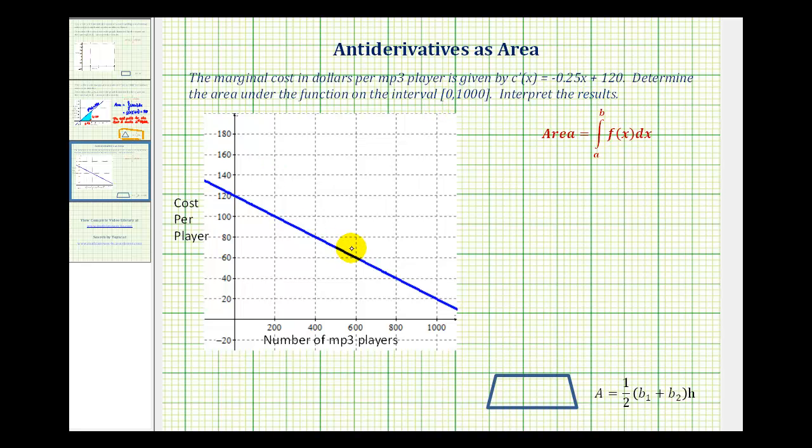So here we have the graph of our marginal cost function. And we want to determine the area under this function above the x-axis on the interval from zero to 1,000.